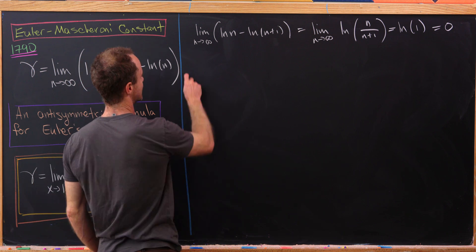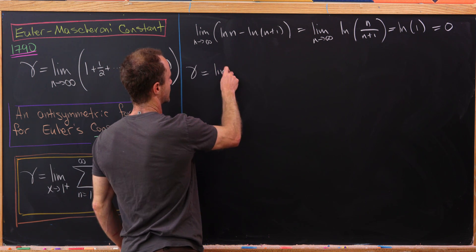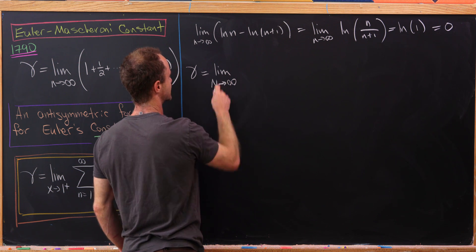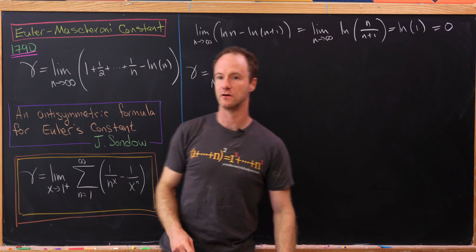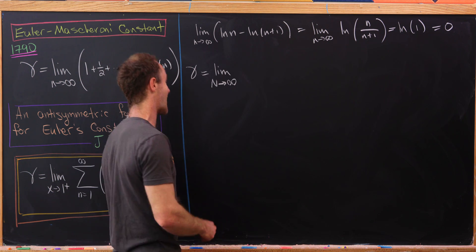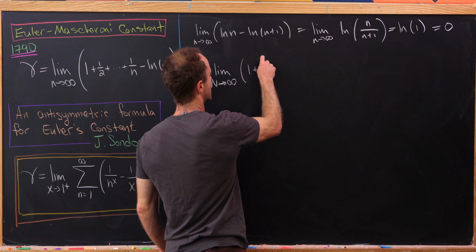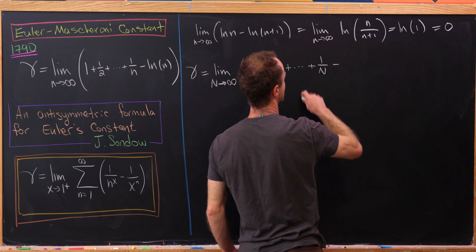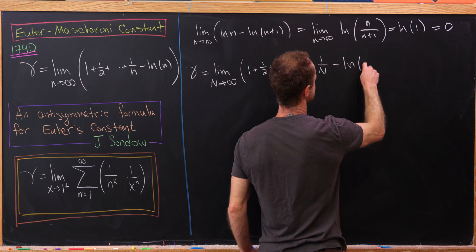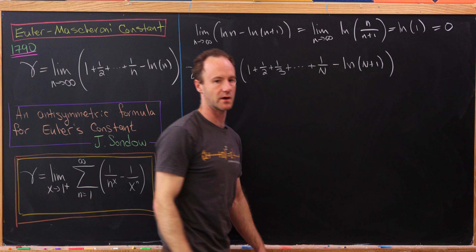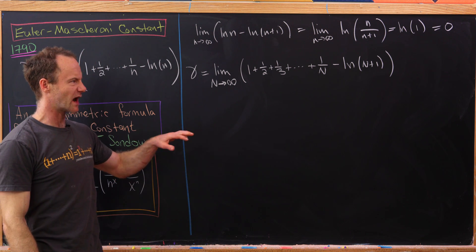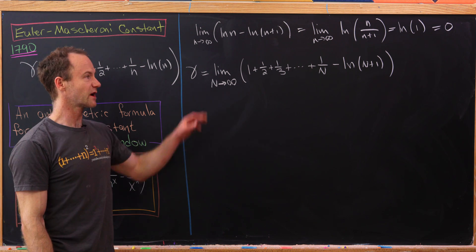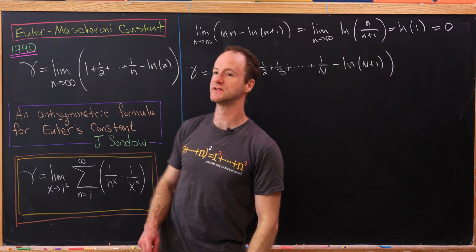So let's start here with gamma and write this as the limit as capital N goes to infinity of 1 plus 1/2 plus 1/3 ending at 1/N, now minus the natural log of N+1. We're able to use log(N+1) because of the observation above. And now we're going to manipulate this object until it turns into our desired formula.